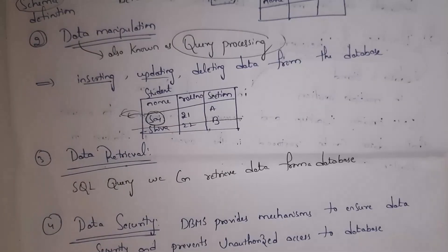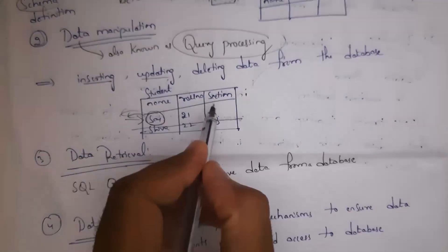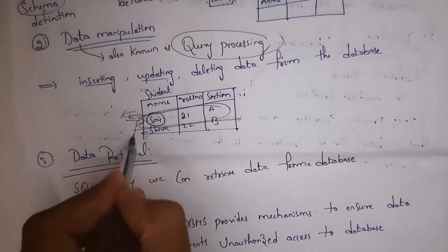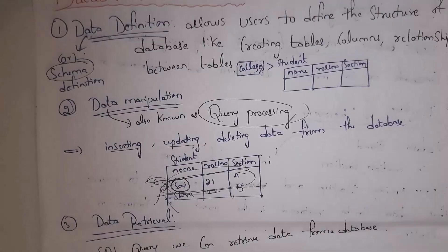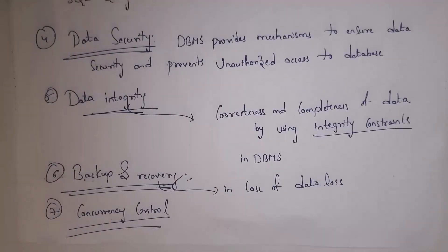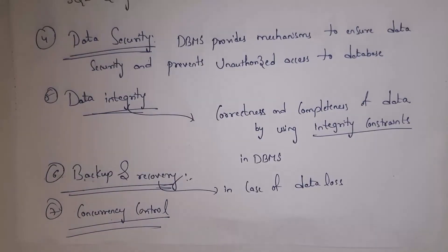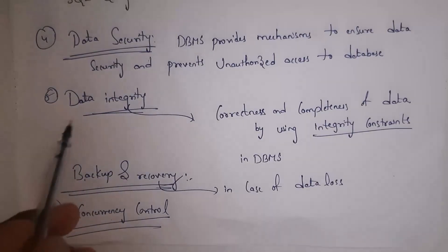The next task is data retrieval — receiving required information from our database. For example, getting information about the student whose roll number is 21. Data definition, data manipulation, and data retrieval are all performed using Structured Query Language (SQL). The next task is data security — giving a password to the database and various access permissions to users. For example, students get only read permission while faculty get both read and write permissions.